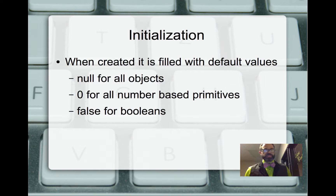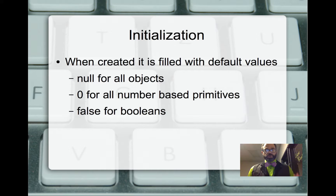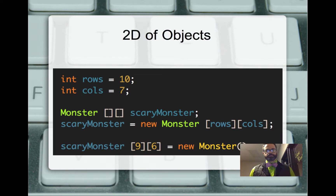When initializing an array, it's always going to be filled with default values just like a regular array. That means all objects will be initialized with null, a 0 for all number-based primitives, and false for boolean primitives. So when we first create an array, we have to remember there's going to be nothing really useful inside it.